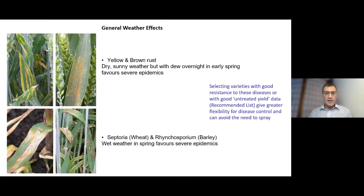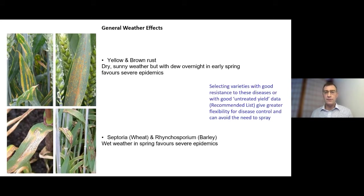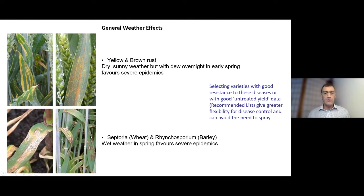We also have the CropProtect app and website, with information pages for a range of different crops. Similar to what I showed with light leaf spot, you have the ability to choose more resistant varieties from the recommended list, or look at the untreated yield value to identify varieties giving greater flexibility in disease management. Generally, dry sunny weather with overnight dew in early spring gets rusts going, while wet weather drives septoria in wheat and rhynchosporium in barley — giving you a feel for which diseases are likely to be more important.